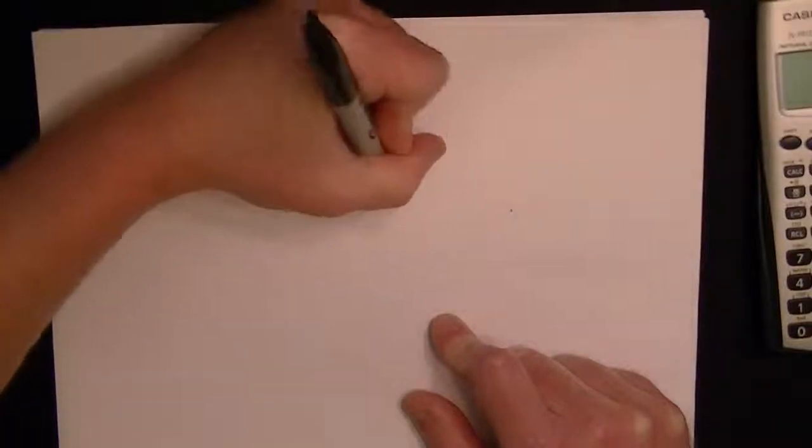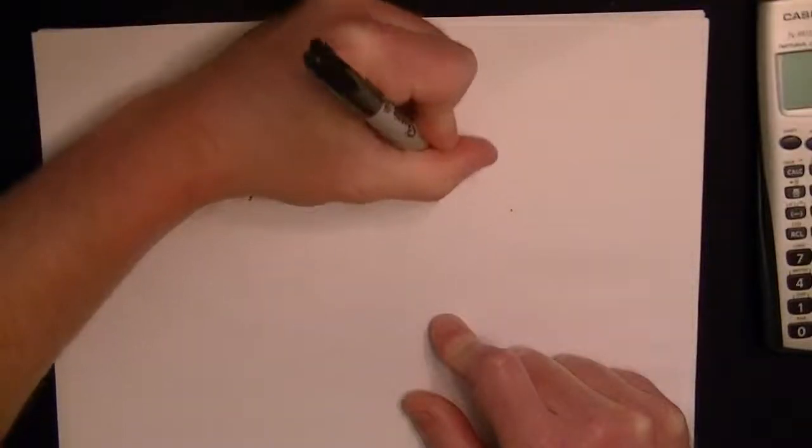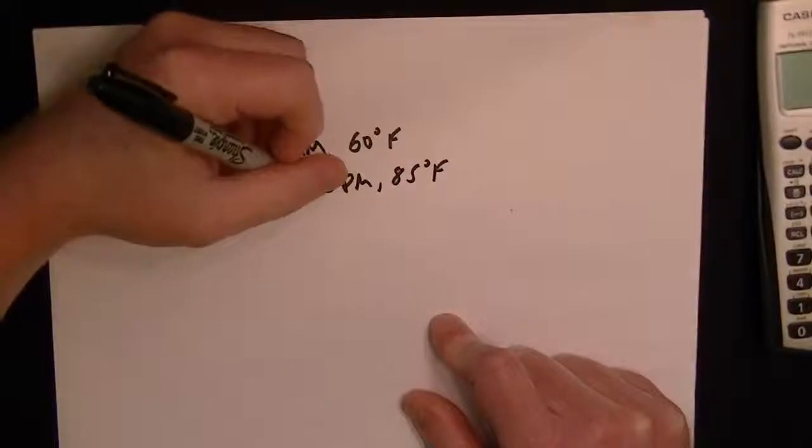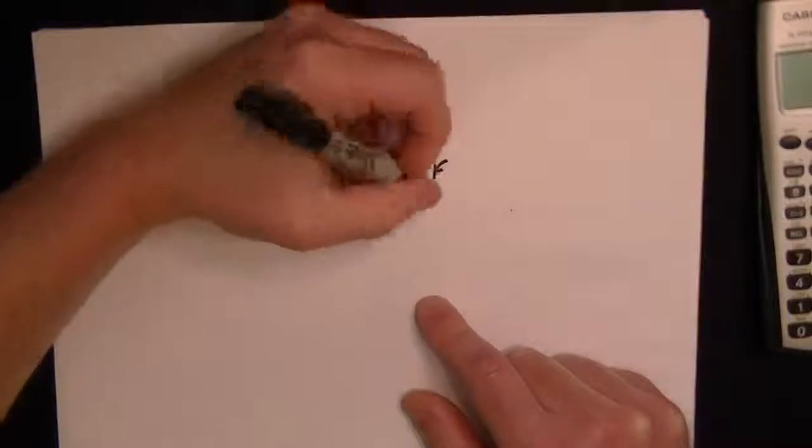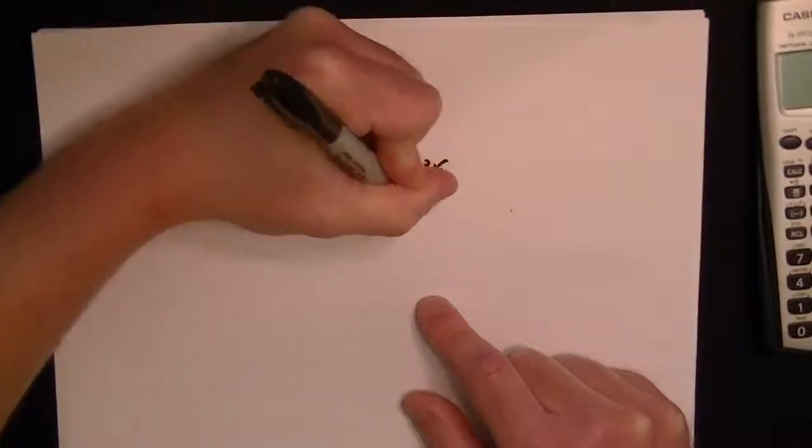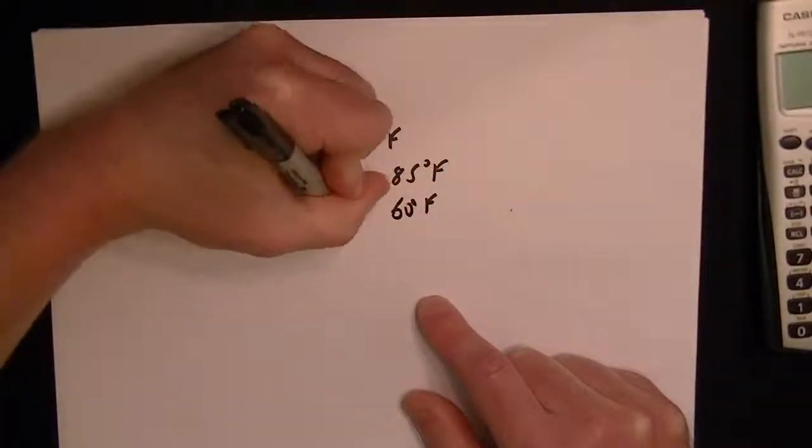So at 3 PM we've got 85°F, and then the temperature drops steadily again, and so that means it dropped to 60 degrees F at 6 PM.